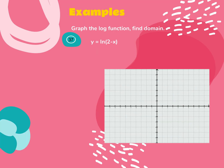The last problem in the original slides is too complex, so I'm replacing it with a more reasonable one: y equals 3 plus natural log of (x minus 1). This is y equals 3 plus log base e of (x minus 1). I know this is a shift up 3 units and a shift to the right 1 unit.